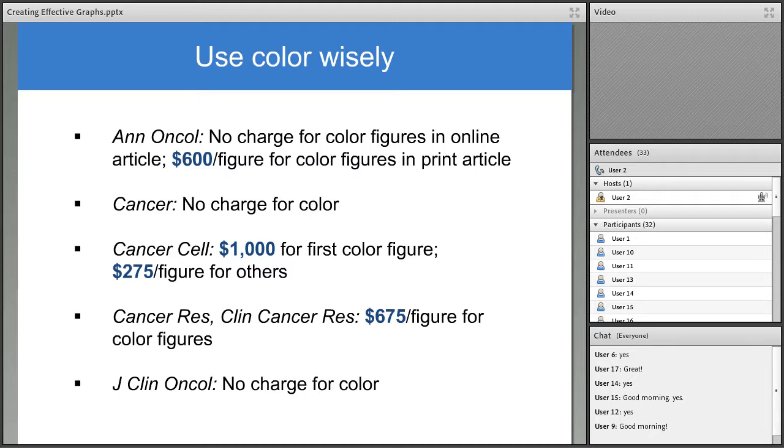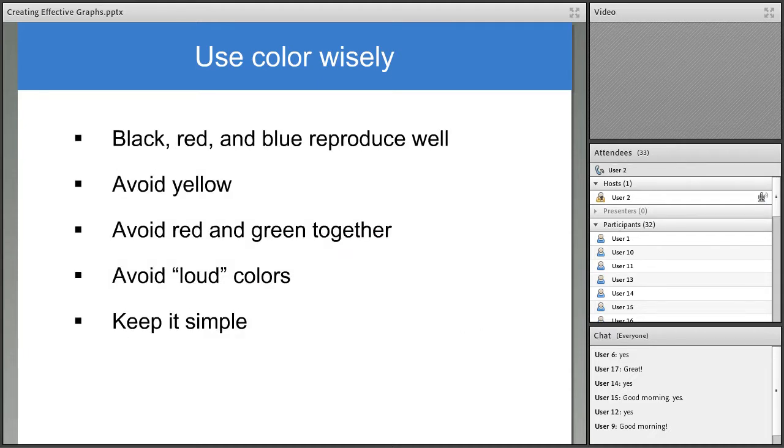A few comments about using color. Some journals require authors to pay for printing of color figures, as you can see from this small sample. Thus, it's wise to read the author instructions for your target journal before you make your graphs. And if you're not sure which journal you'll be publishing in, we recommend avoiding using color in your graphs, unless it's necessary for clarity or it could get very expensive. If the graph won't be printed in color, don't design it in color because colors don't reproduce well in black and white. So here's some things to consider when choosing which colors to use. Black, red, and blue are the best colors to use. Yellow should be avoided because it doesn't show up well. Consider color blind readers and try not to use red and green in the same graph. Avoid loud or very bright colors and keep it simple. Use as few colors as possible.